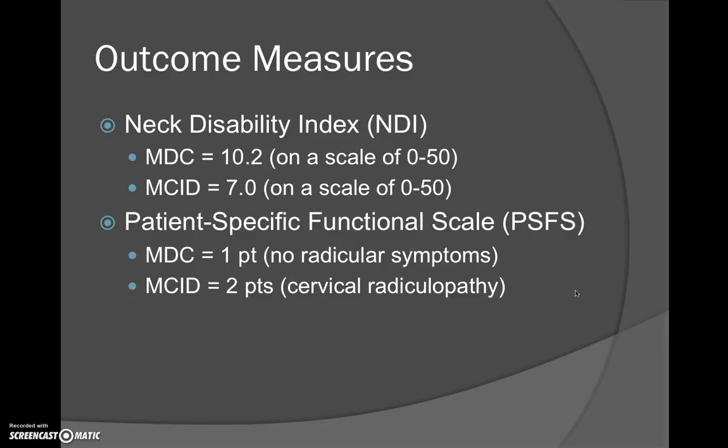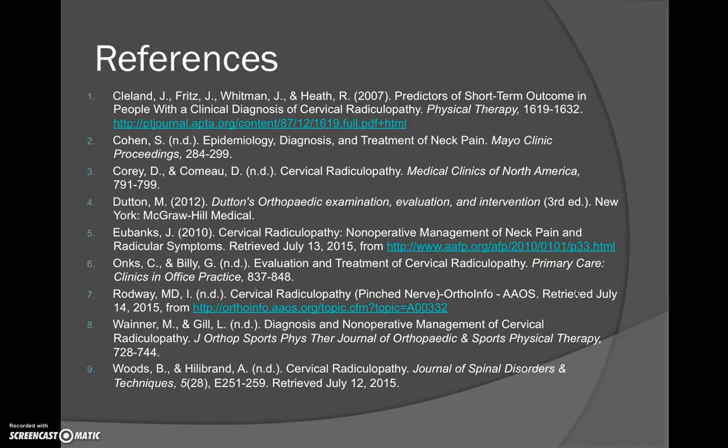The Patient Specific Functional Scale (PSFS) is used to assess functional ability to complete specific activities. Patients rate their ability to complete an activity on an 11-point scale at the level experienced prior to their injury, where 0 represents unable to perform and 10 represents able to perform at their prior level. Patients select the value that best describes their current ability. The MDC is 1 point for no radicular symptoms and the MCID is 2 points for cervical radiculopathy. These are our references — we hope you gained some insight into cervical radiculopathy. Thank you.